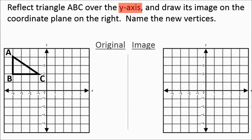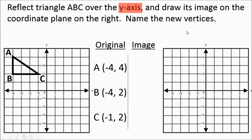We're going to name the original points. Point A is at negative 4, 4. B is at negative 4, 2. C is at negative 1, 2. Hopefully you know how to name points on a coordinate plane — if not, I've got another video covering that.